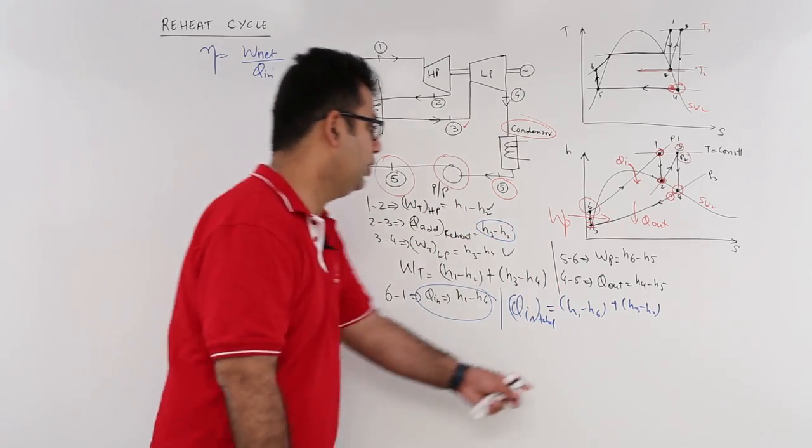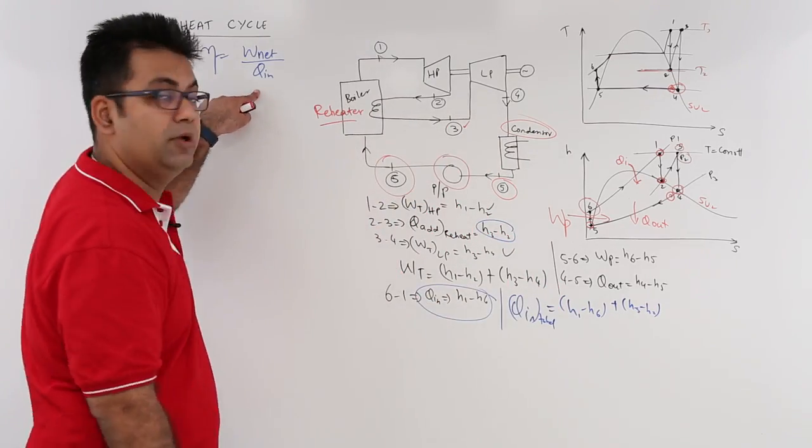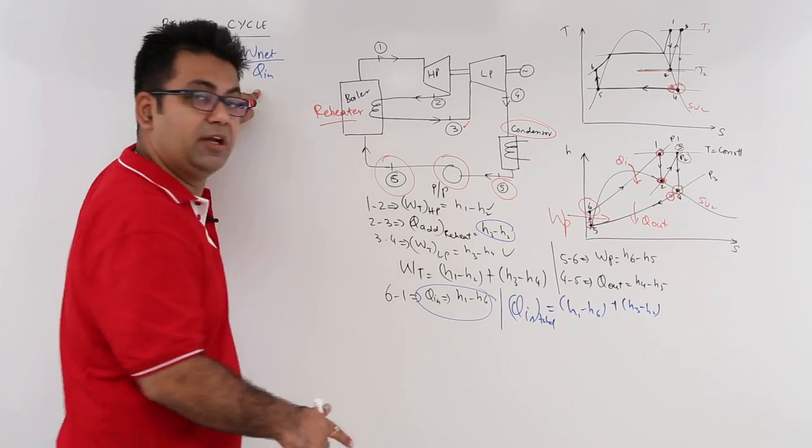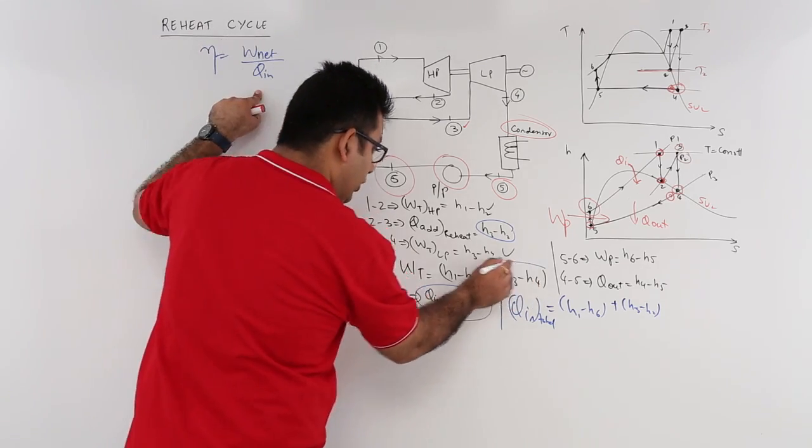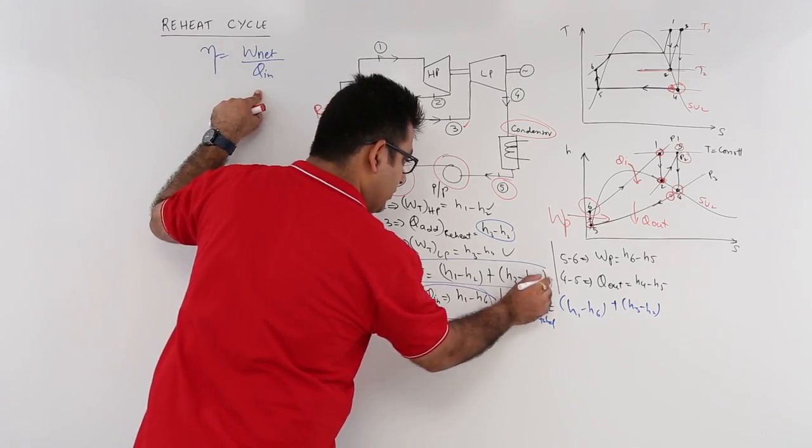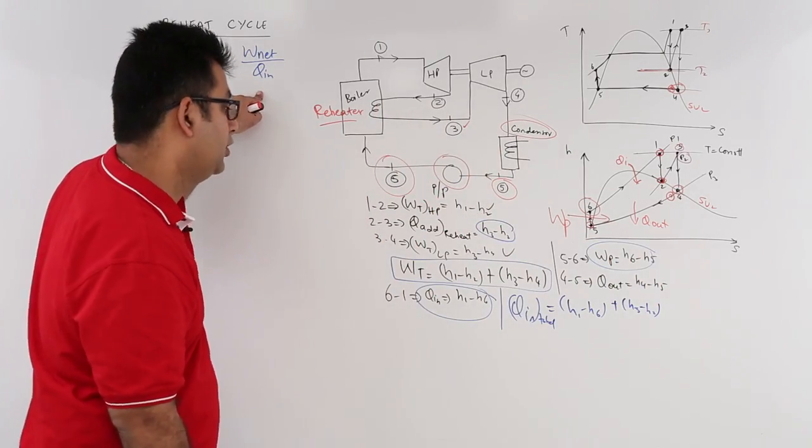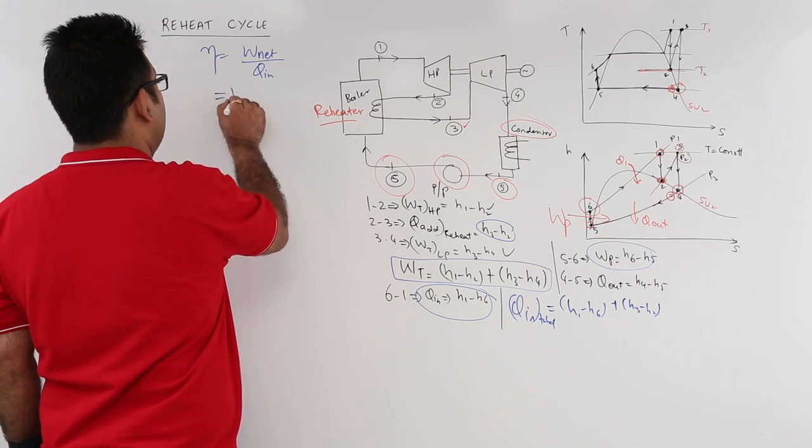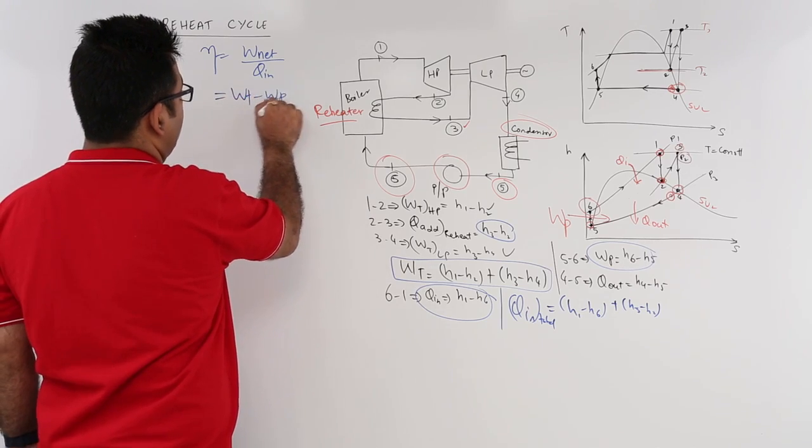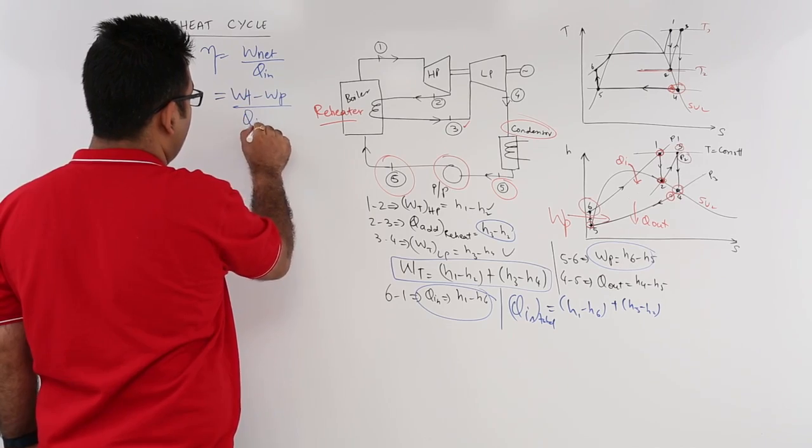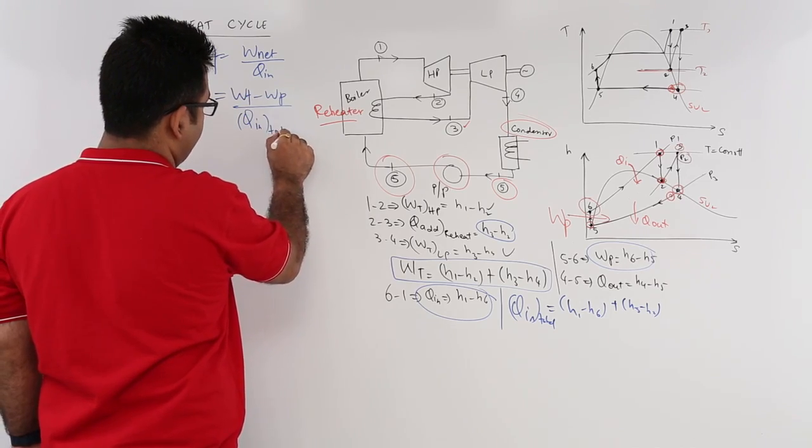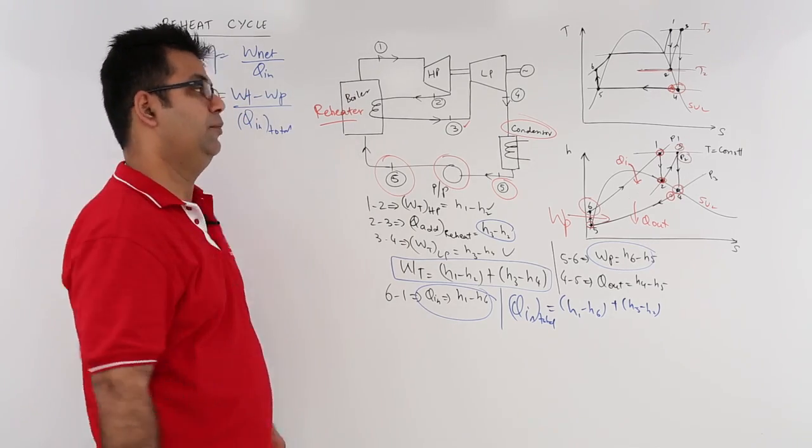Your net work output would be Wt minus Wp. So you will have (Wt - Wp) divided by total heat input.